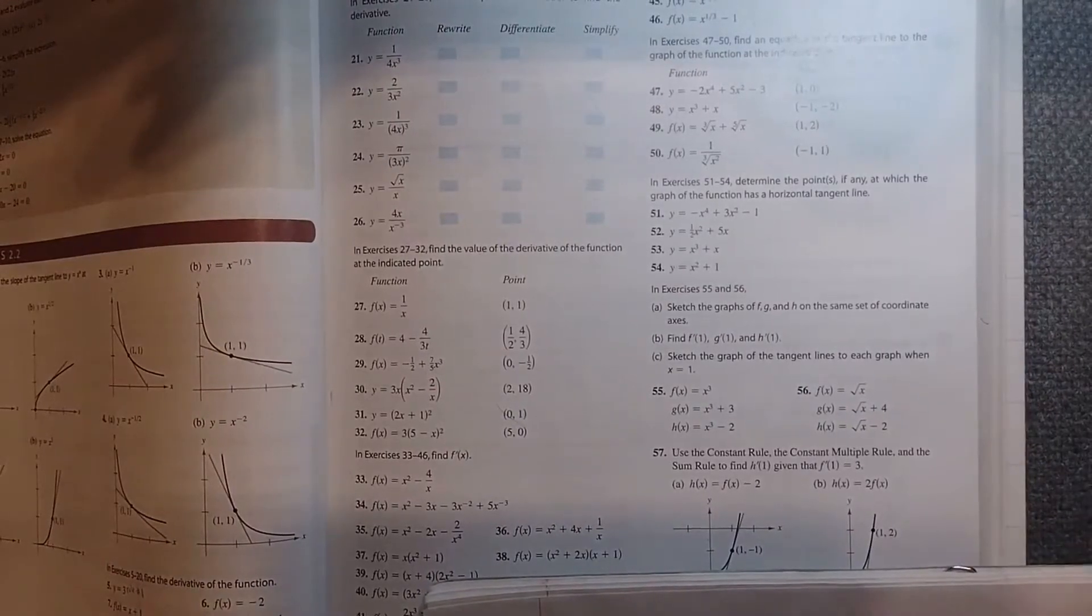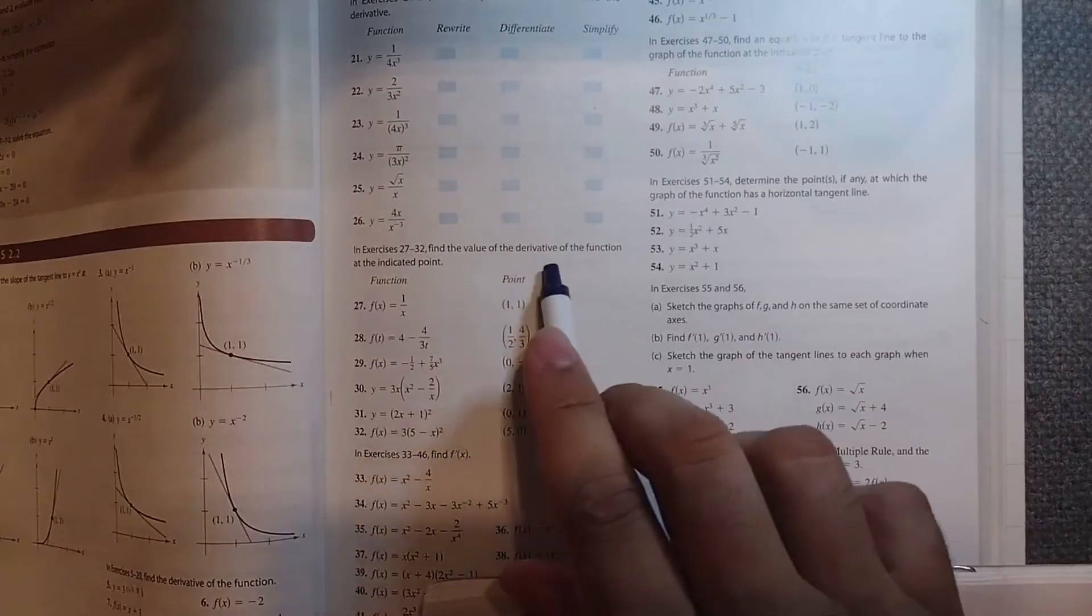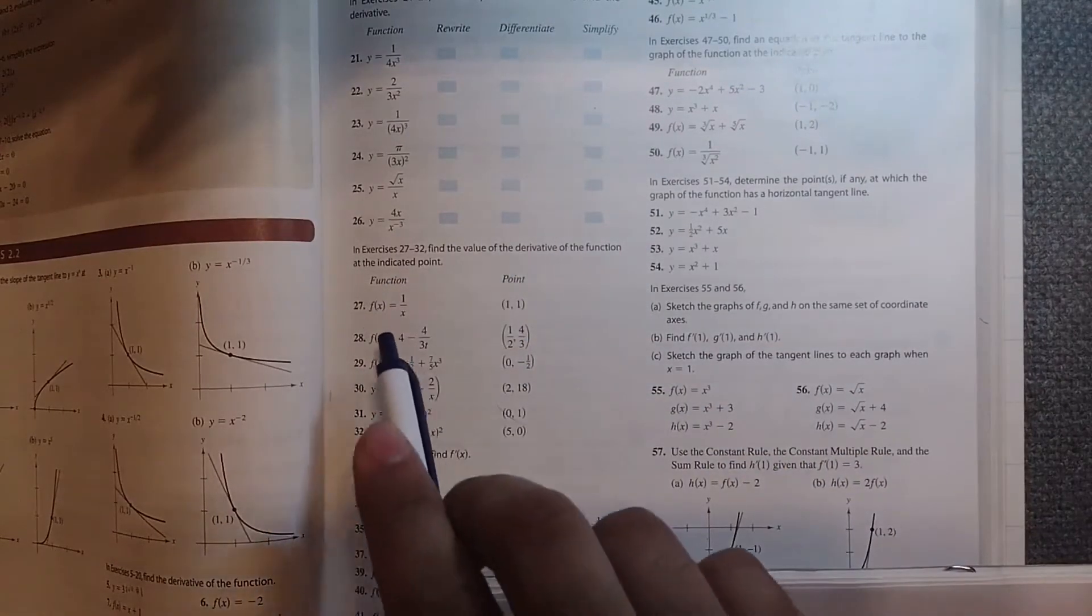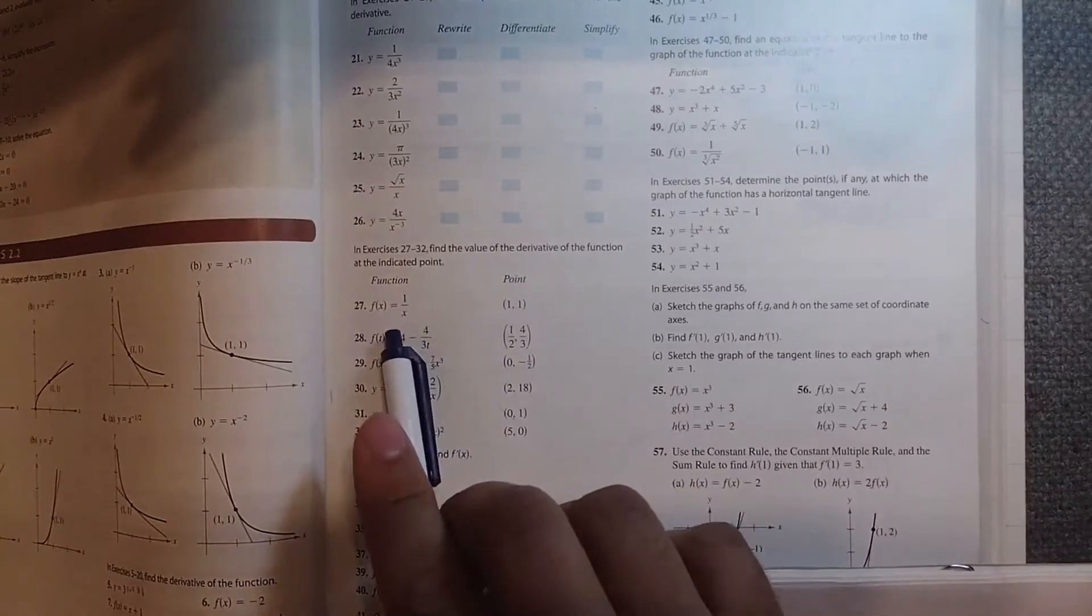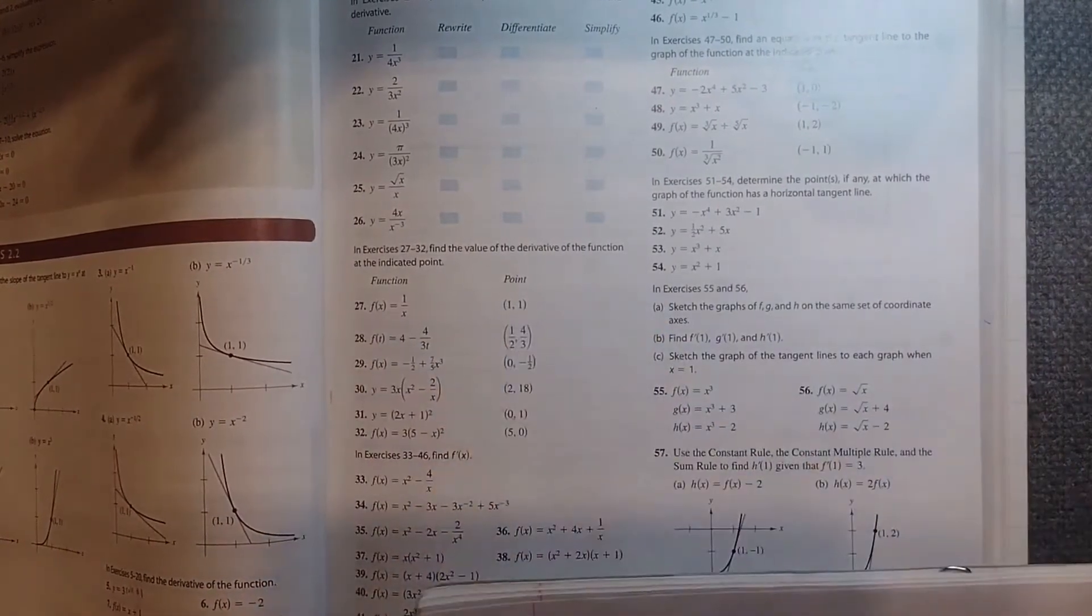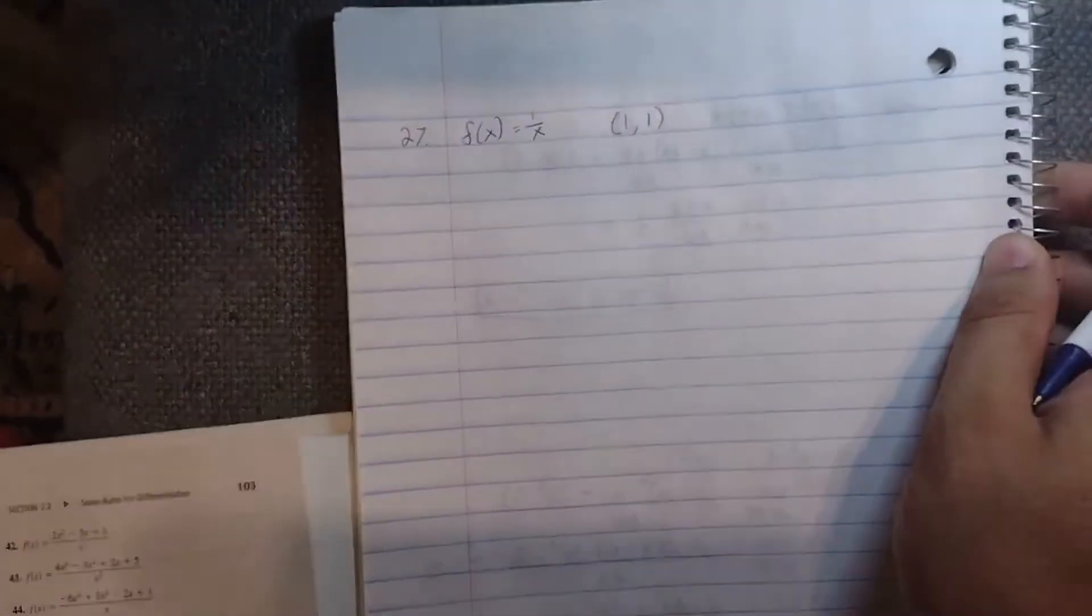Using rules for differentiation, find the value of the derivative of the function at the indicated point. Let's do example 27 first. f(x) = 1/x at the point (1, 1).